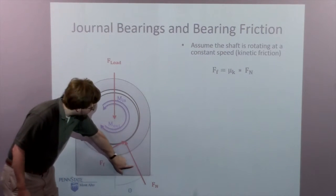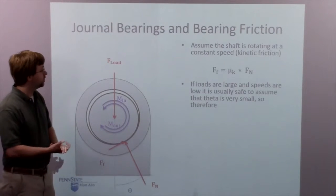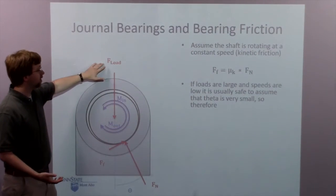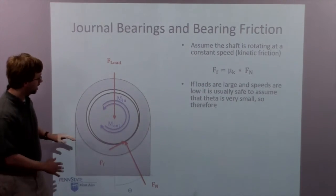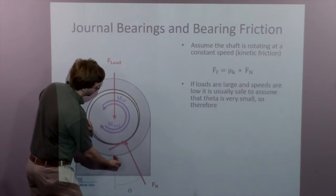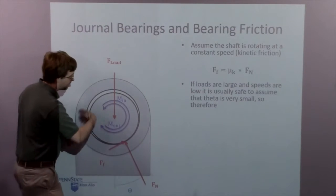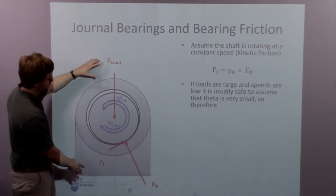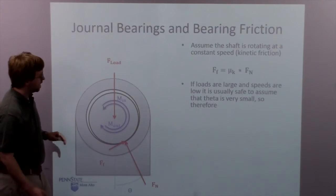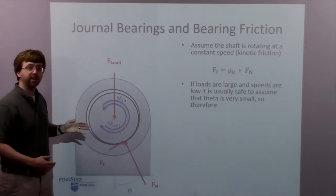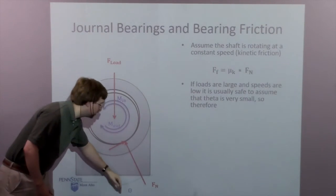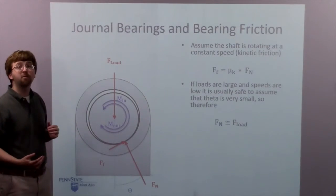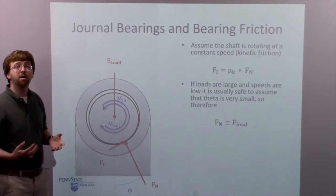For the normal force, we're going to assume that the load is large and the speeds are low, so there's very little climbing up the surface. The faster this goes the more it would want to climb up, and the lower the load force the more it's able to climb up. But if the load is large and speed is low, this theta angle is pretty low, which means we can basically assume that the normal force and the load force are about the same.